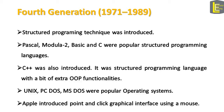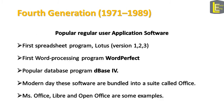In the fourth generation of computer software, structured programming techniques were introduced. Pascal, Modula-2, Basic, and C were popular structured programming languages. C++ was also introduced in the 1980s — a structured programming language with extra object-oriented functionalities. Popular operating systems in this generation were Unix, PC-DOS for IBM computers, and MS-DOS for many general computers. For the first time, the mouse was introduced, and Apple introduced its point-and-click graphical user interface using a mouse. Popular user application software were spreadsheet programs like Lotus 1-2-3, the first word processing program like WordPerfect, and a small database program like dBase 4. Modern-day equivalents of these software are bundled into suites — MS Office, LibreOffice, and OpenOffice are some examples.